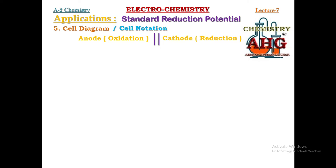There are certain rules to keep in mind while writing a cell diagram. Rule number one: whenever you are given a chemical equation, we write down each and every particle — whether ions or molecules — except electrons. Electrons are never written in the cell diagram, neither on the anodic side nor on the cathodic side.